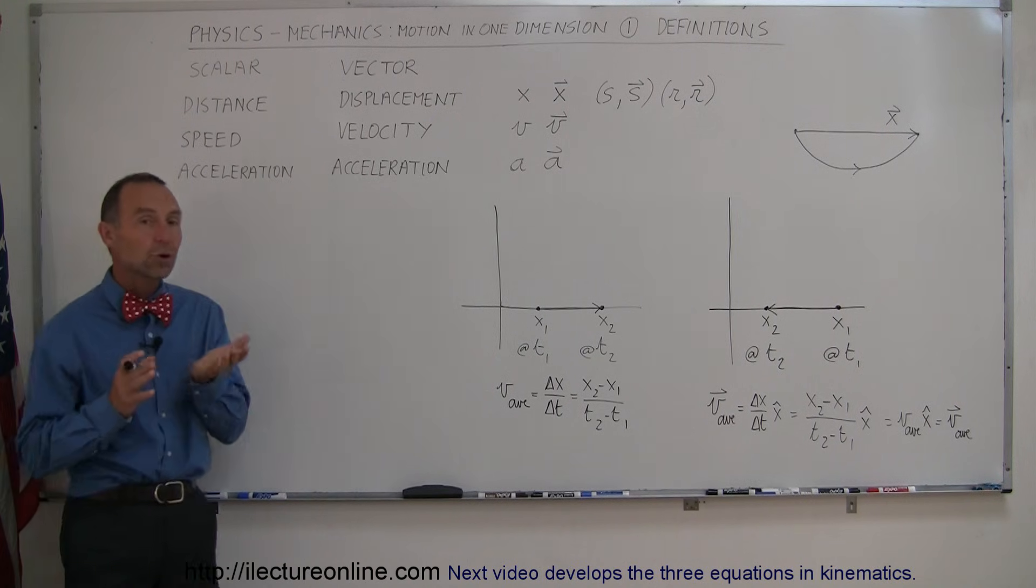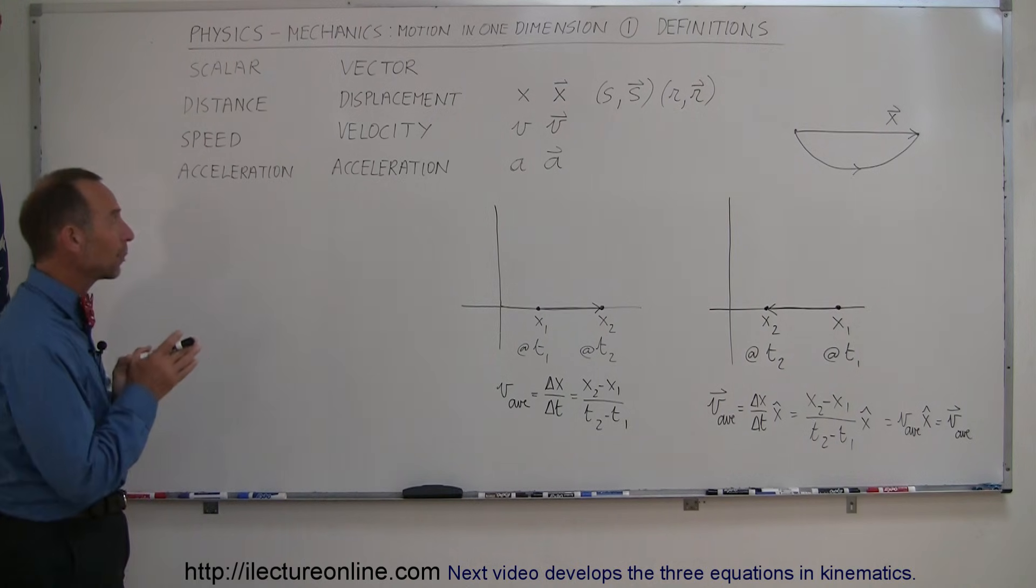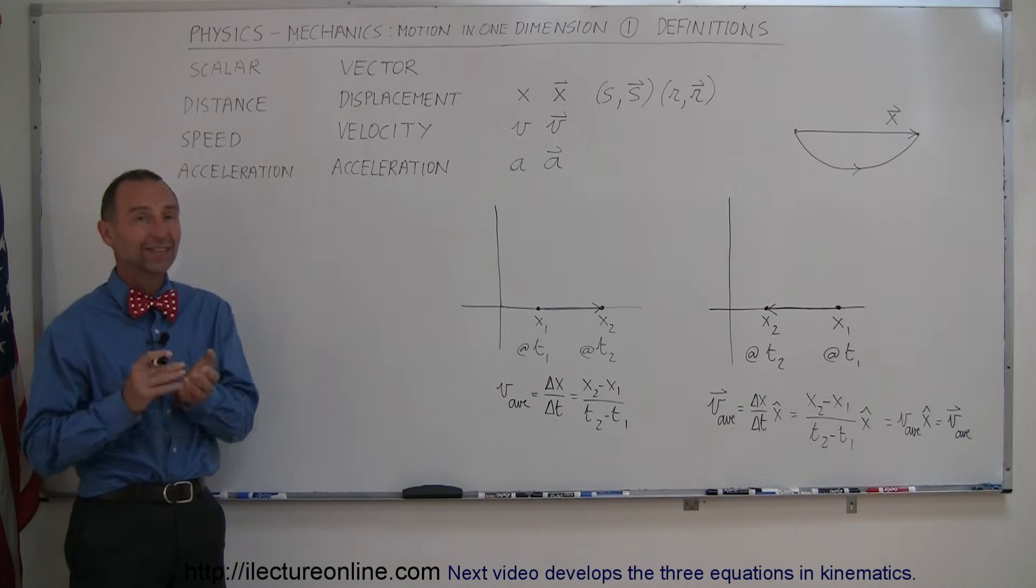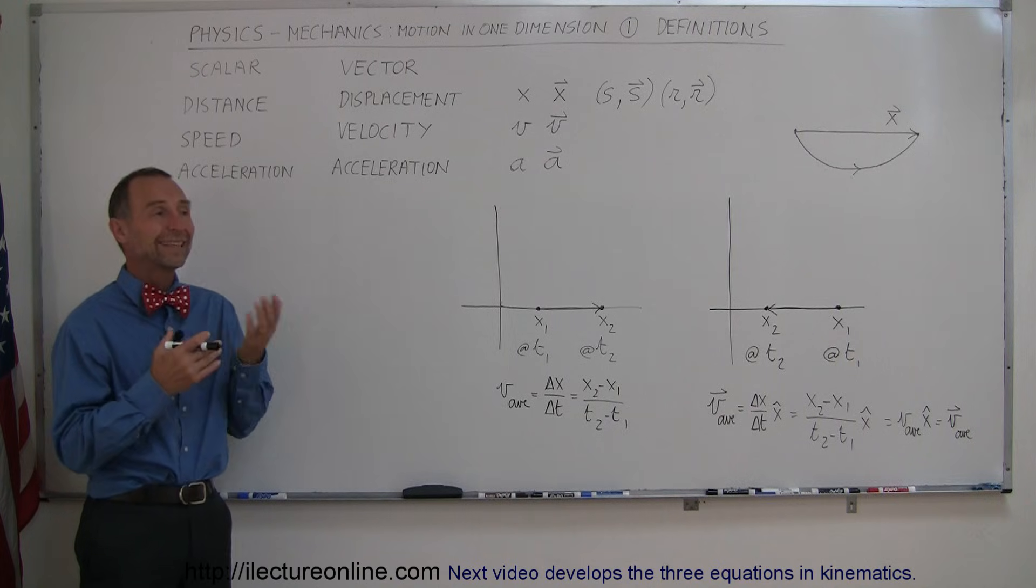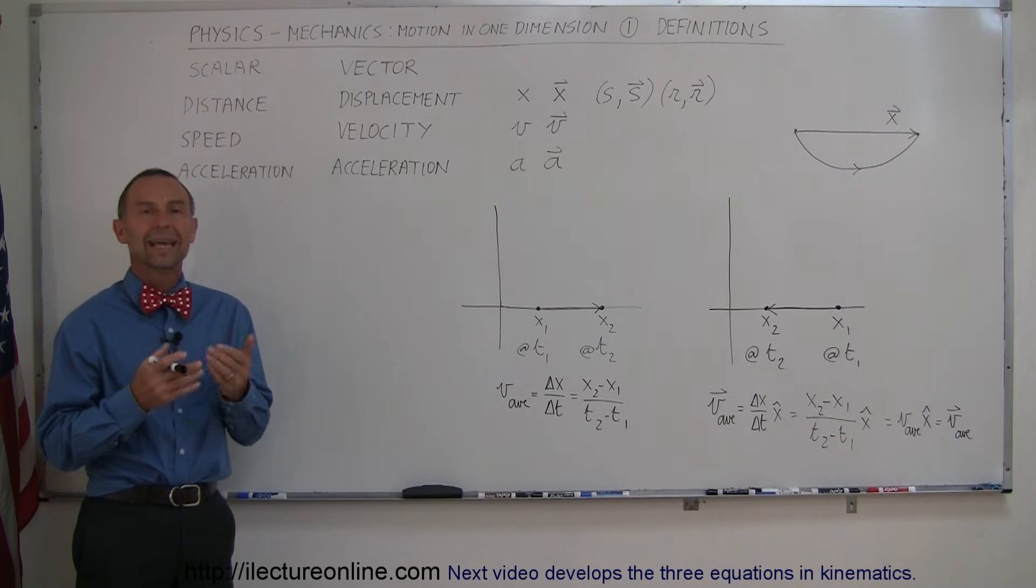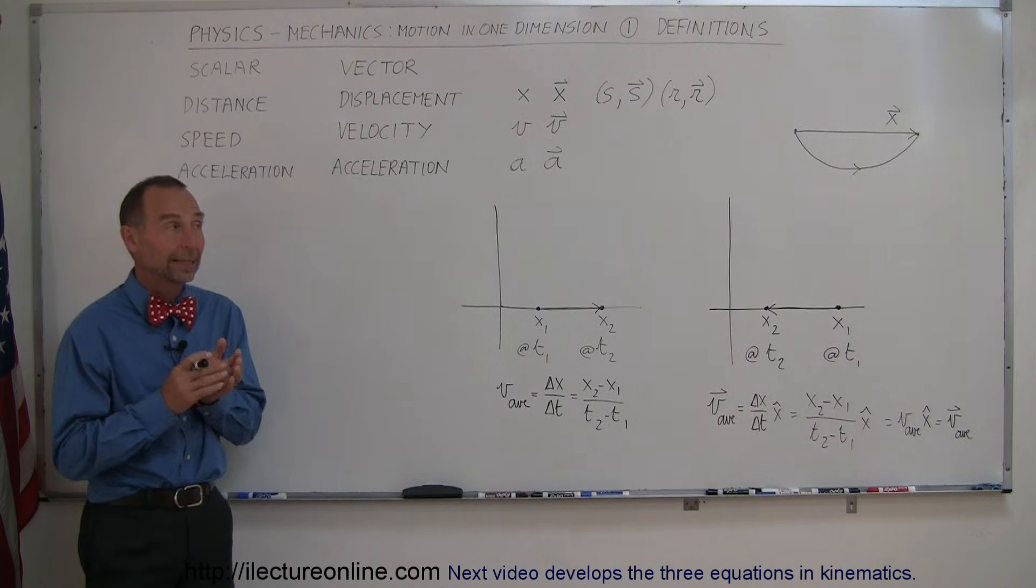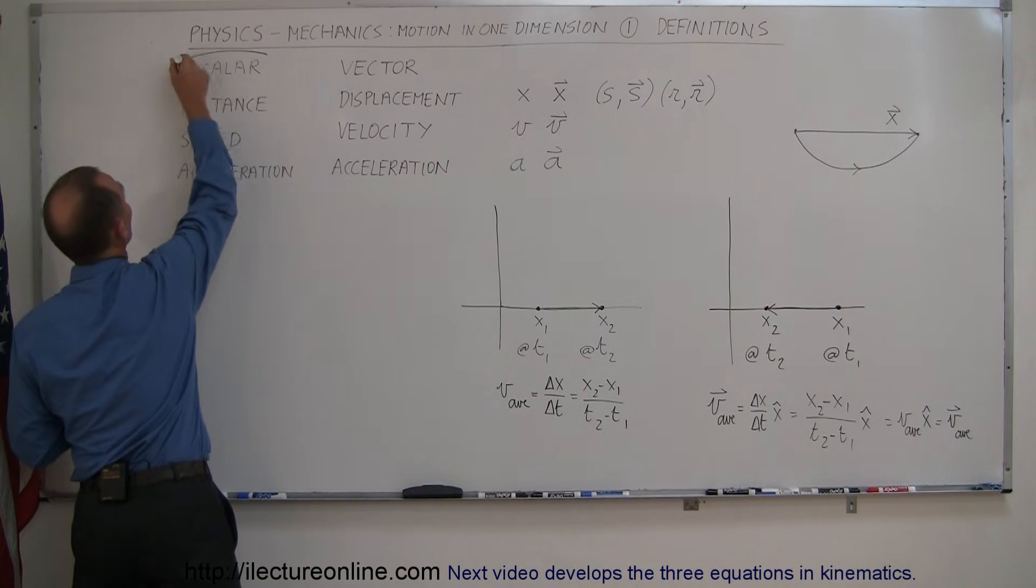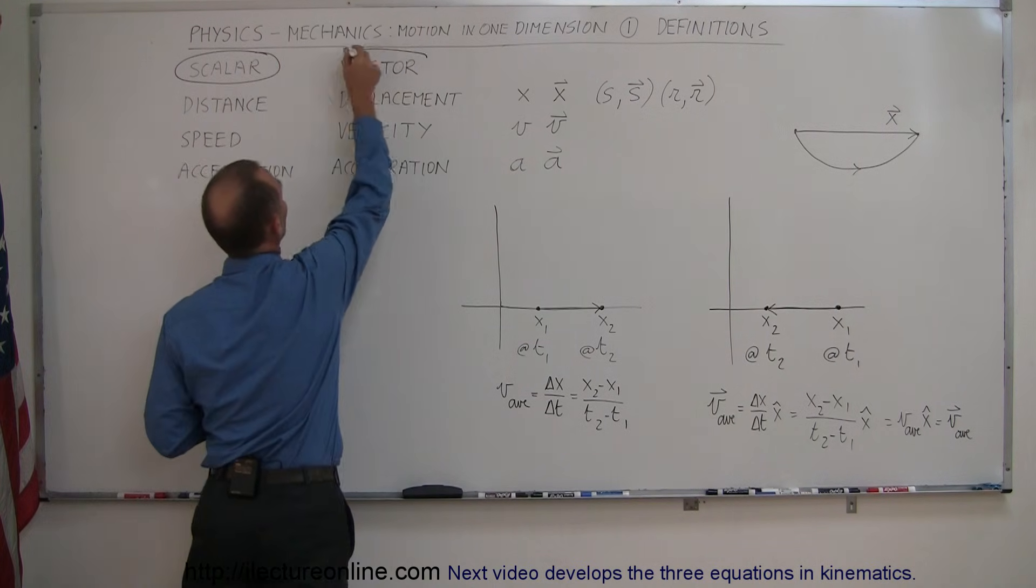In motion we have to take into account that we can either talk about what we call scalar quantities or vector quantities. For example, scalar quantities in motion would be distance, speed and acceleration. Now the vector counterparts, so call these the scalars and call these the vector counterparts.